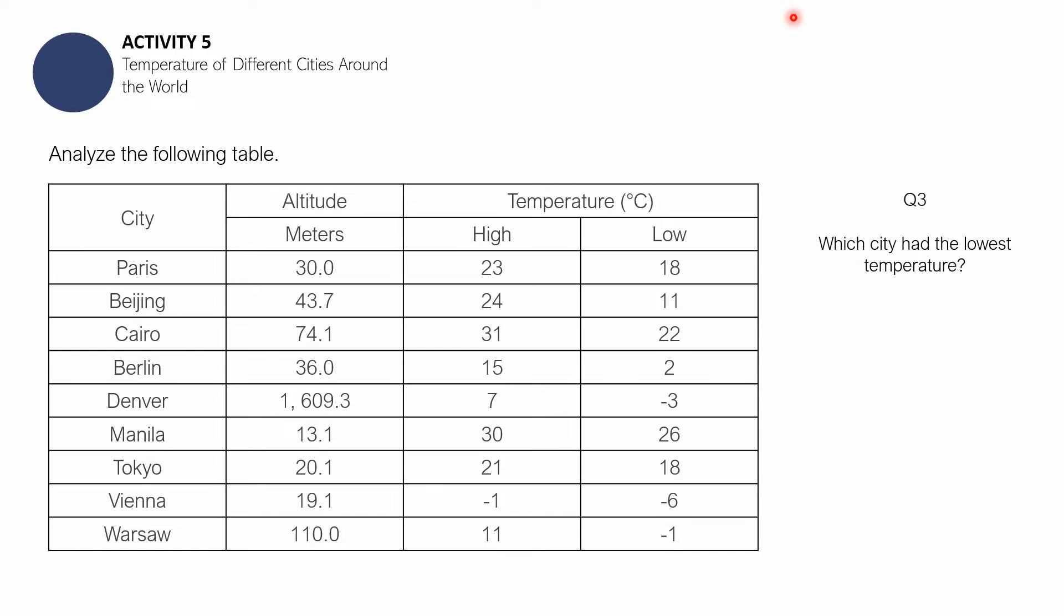Question number 3: Which city has the lowest temperature? In terms of all-time low or average low, which among these cities has the lowest temperature? Or in terms of all-time high and average high, if it's average high is still quite low, it's still lower than other cities, you can also consider that. You can proceed now.